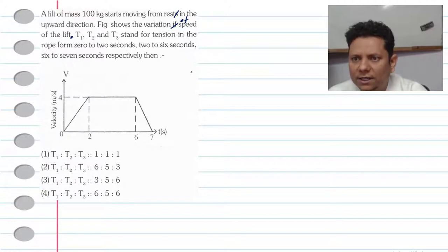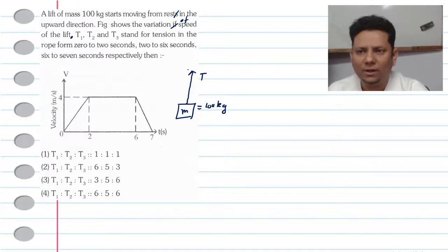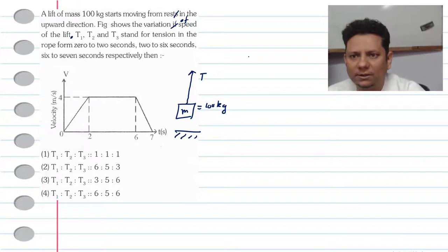Now, the scenario is that you have one block of 100 kg. M, its mass, is equal to 100 kg. We are taking it upward with some tension force. In this case, we're taking it vertically upwards.